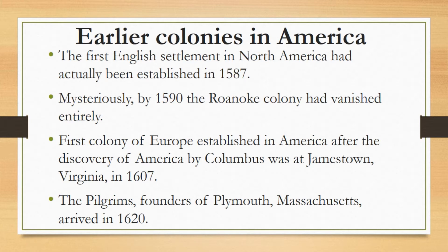Many of the people who settled in the New World came to escape religious persecution. The Pilgrims, founders of Plymouth, Massachusetts, arrived in 1620. In both Virginia and Massachusetts the colonists flourished with some assistance from Native Americans. New world grains such as corn kept the colonists from starving, while in Virginia tobacco provided a valuable cash crop.